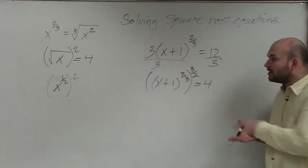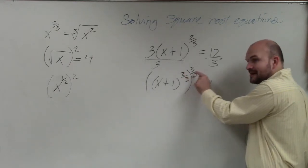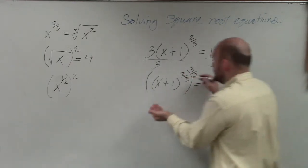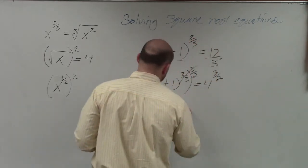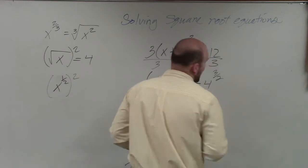Why would you raise it to the 3/2 power? Well, because when you multiply a number times its reciprocal, it's going to equal 1. So therefore, I have to raise this to the 3/2 power. So I'm left with x plus 1 equals 4 to the 3/2.